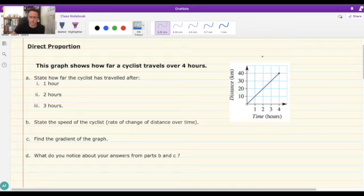This graph here shows how far a cyclist travels over four hours. First off, just starting with reading the graphs, state how far the cyclist has traveled after one, two, and three hours respectively. You can see across the bottom here we've got time in hours, and then across the vertical axis, the y-axis, we have the distance covered in kilometers.